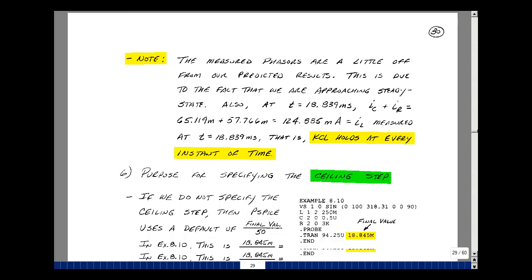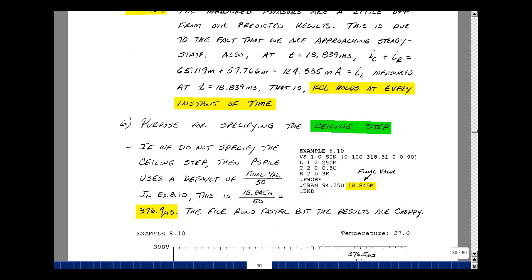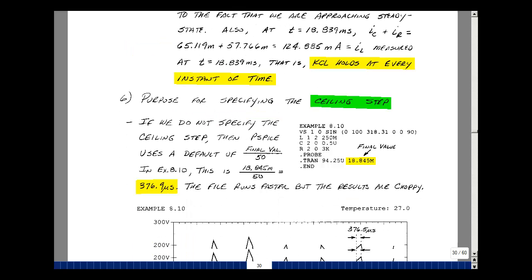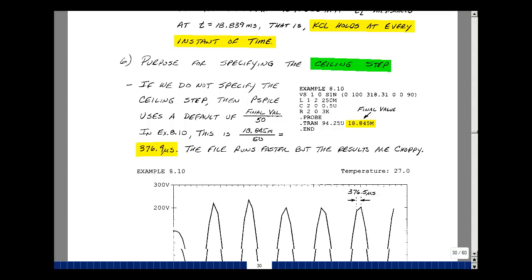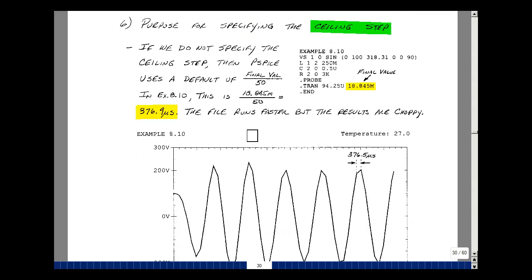We also did this thing with the ceiling step. We're going to talk about this in 201 a couple times, but here's the reason why we specify what we do for the ceiling step. In our simulation, we specified a start time and then a ceiling step. If you don't specify something here, the default is zero. But if you don't specify the ceiling step, the default is the final value divided by 50.